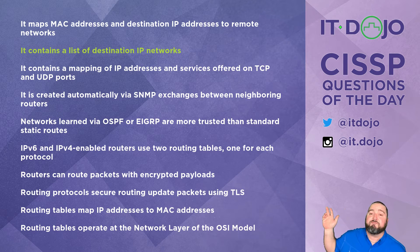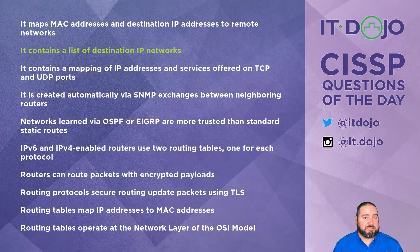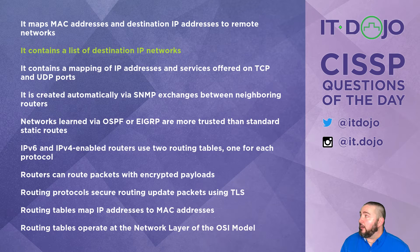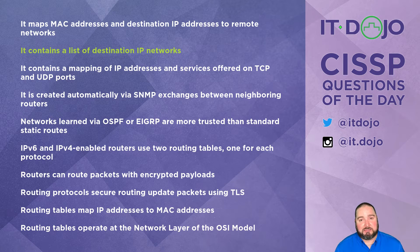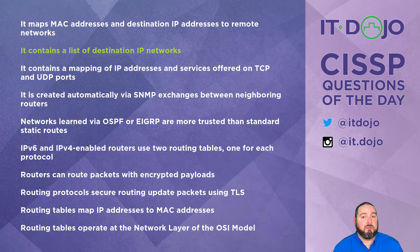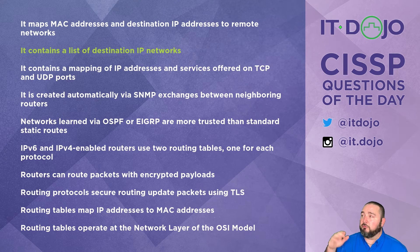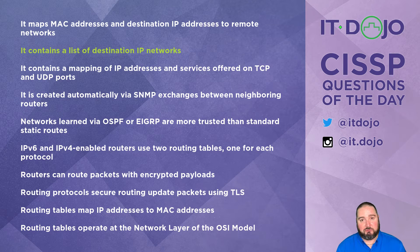Next contender says that routes learned via OSPF and/or EIGRP are more trusted than standard static routes — also not true. Static routes are normally trusted way more than OSPF or EIGRP learned routes. In most circumstances, the only thing more trusted than a static route is a directly connected network. The router trusts itself above all else via directly connected routes, then static routes that you the administrator type in, and then all the routing protocols come after that.